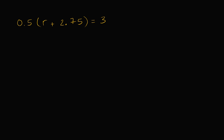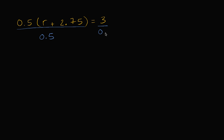There are a bunch of ways you could tackle this. Your temptation might be to distribute the 0.5, but that makes it a little hairy because 0.5 times 2.75 gets complicated. A simpler approach is to divide both sides by 0.5 — that way we get more whole numbers involved. Whatever I do to the left hand side I have to do to the right hand side. Dividing the left by 0.5 gets rid of the 0.5, and 3 divided by 0.5 is 6 — that's the same as asking how many halves fit into 3, which is 6. So these cancel out and we get r plus 2.75 is equal to 6.